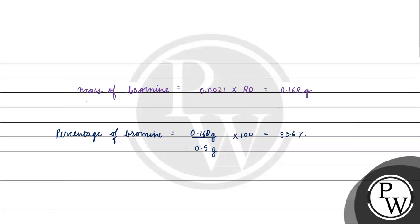If we want the nearest integer, then 34 percent. So the final answer for this question is 34 percent. I hope you understood it well — thank you, all the best!